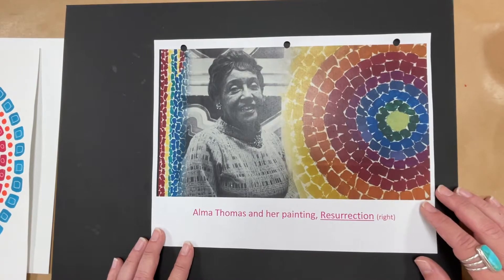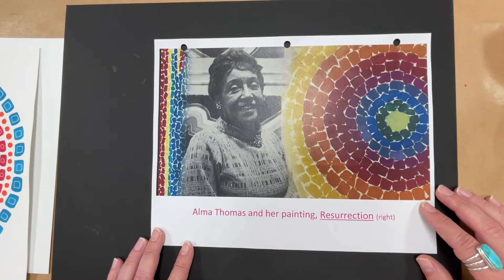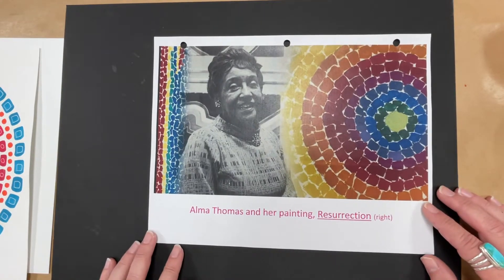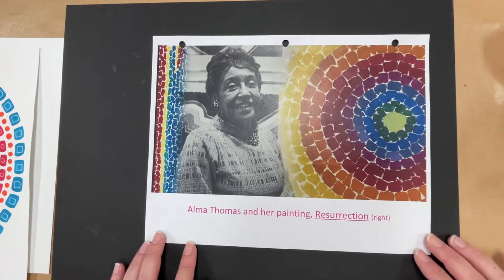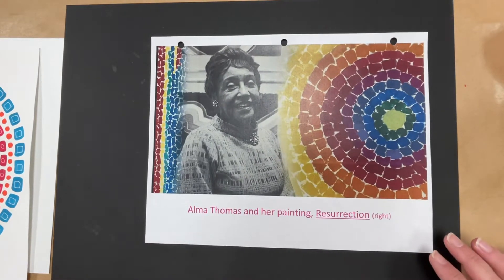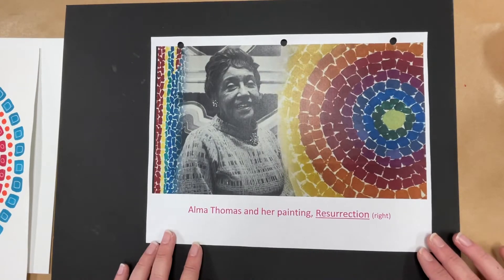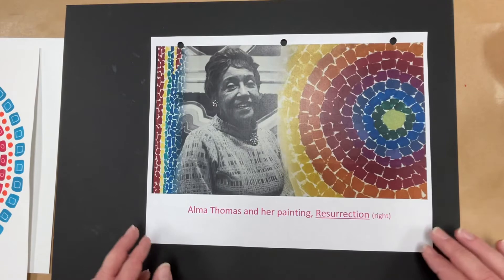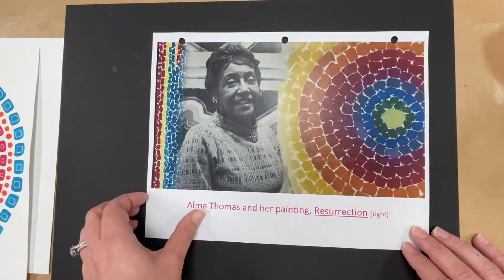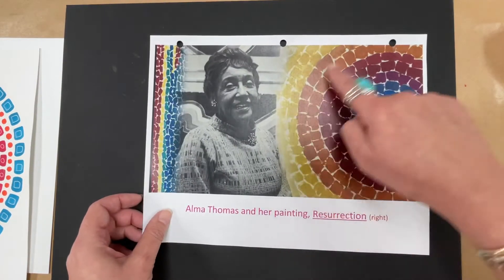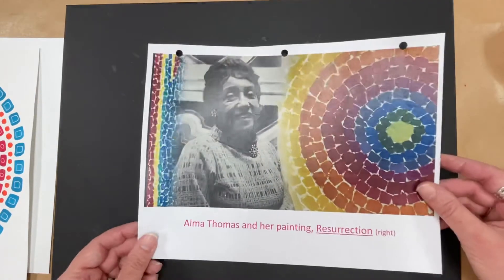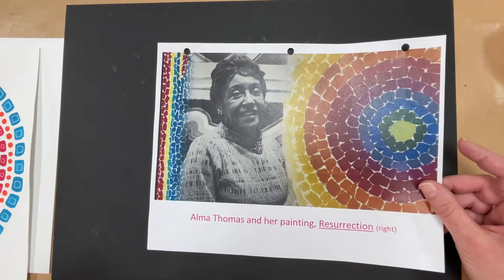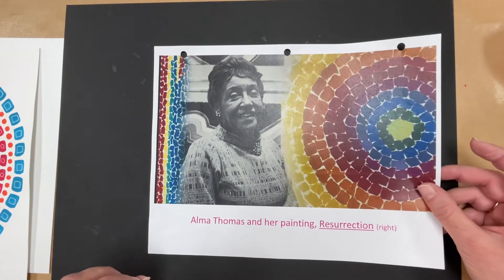She was born in Georgia in 1891 and then she moved to Washington D.C. and that's where she lived most of her life and she died in 1978. But she's special because she was one of the first, especially female African-American artists, to get recognition for her work. She's very important in art history and I just love her artwork. I love the way her artwork resembles rainbows with all the colors. Your teacher has a link to show you a video about Alma Thomas and I hope that before you start this project, you'll get a chance to do that.